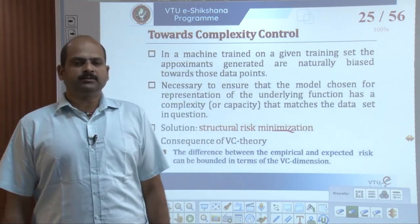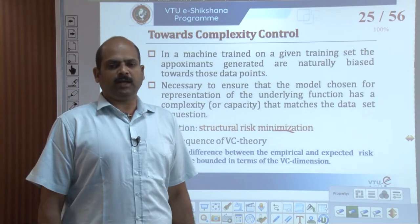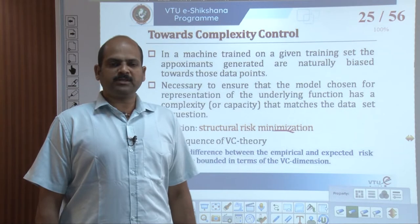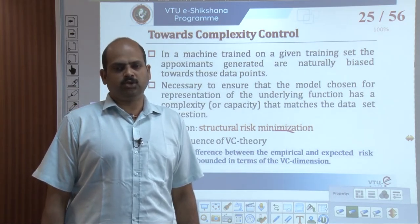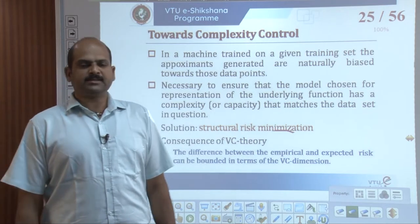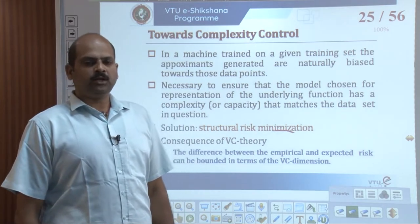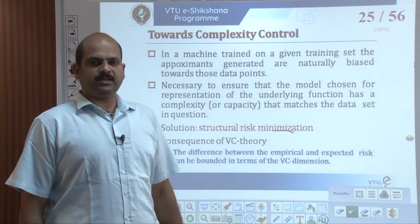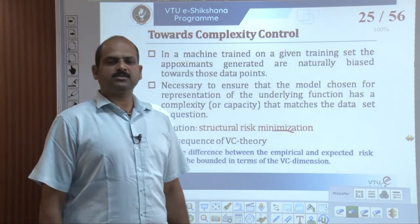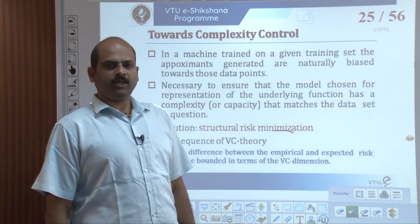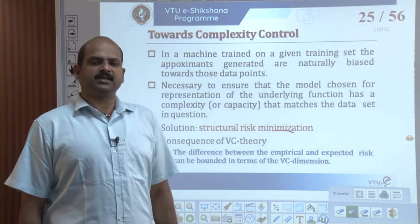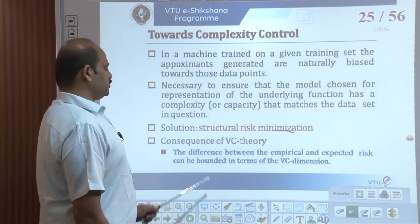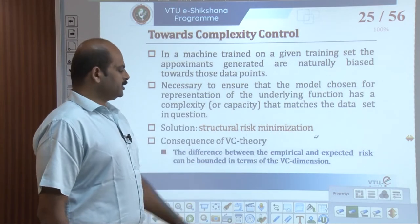Whenever we train a machine on a given training set, the approximants generated are naturally biased towards those data points. It is necessary to ensure that the model chosen from a representation of the underlying function has a complexity or capacity that matches the dataset in question. The solution offered by statistical learning theory is called structural risk minimization.